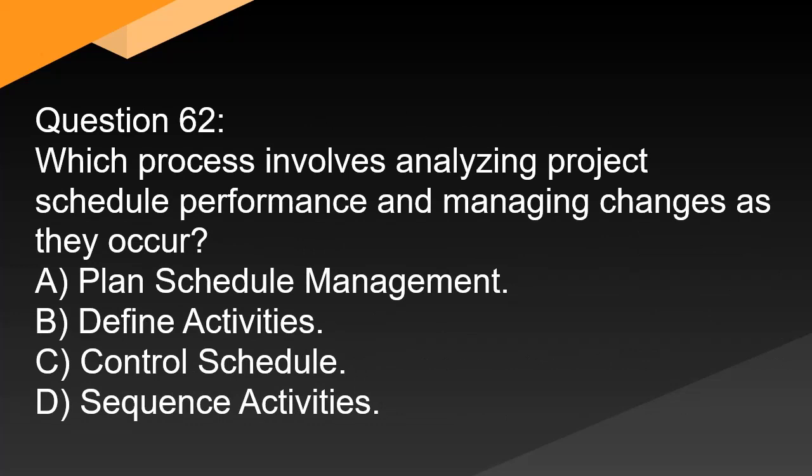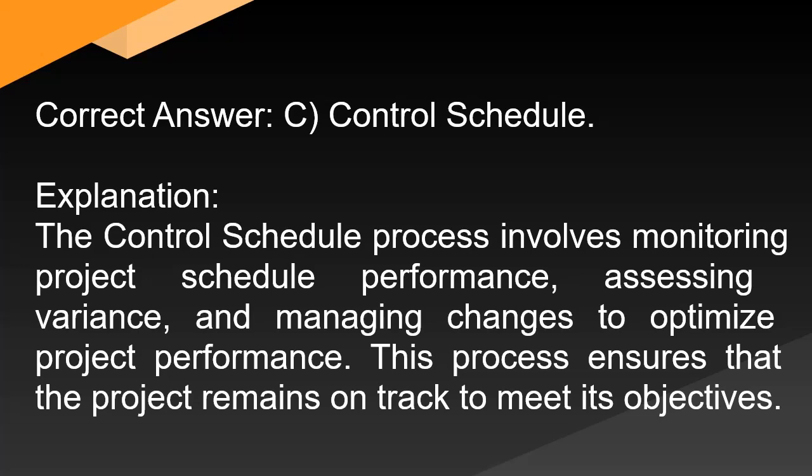Question 62: What process involves analyzing project schedule performance and managing changes as they occur? A. Plan schedule management. B. Define activities. C. Control schedule. D. Sequence activities. Correct answer: C. Control schedule. Explanation: The control schedule process involves monitoring project schedule performance, assessing variance, and managing changes to optimize project performance. This process ensures that the project remains on track to meet its objectives.